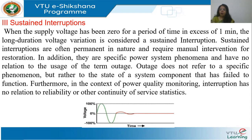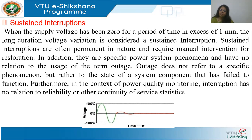An outage refers to a state of a system component which has failed to function — a line outage means the line is removed from service. In the concept of power quality monitoring, interruption has no relation to reliability or continuity-of-service statistics. Sustained interruption simply means, for whatever reason, the voltage comes close to zero for more than one minute.